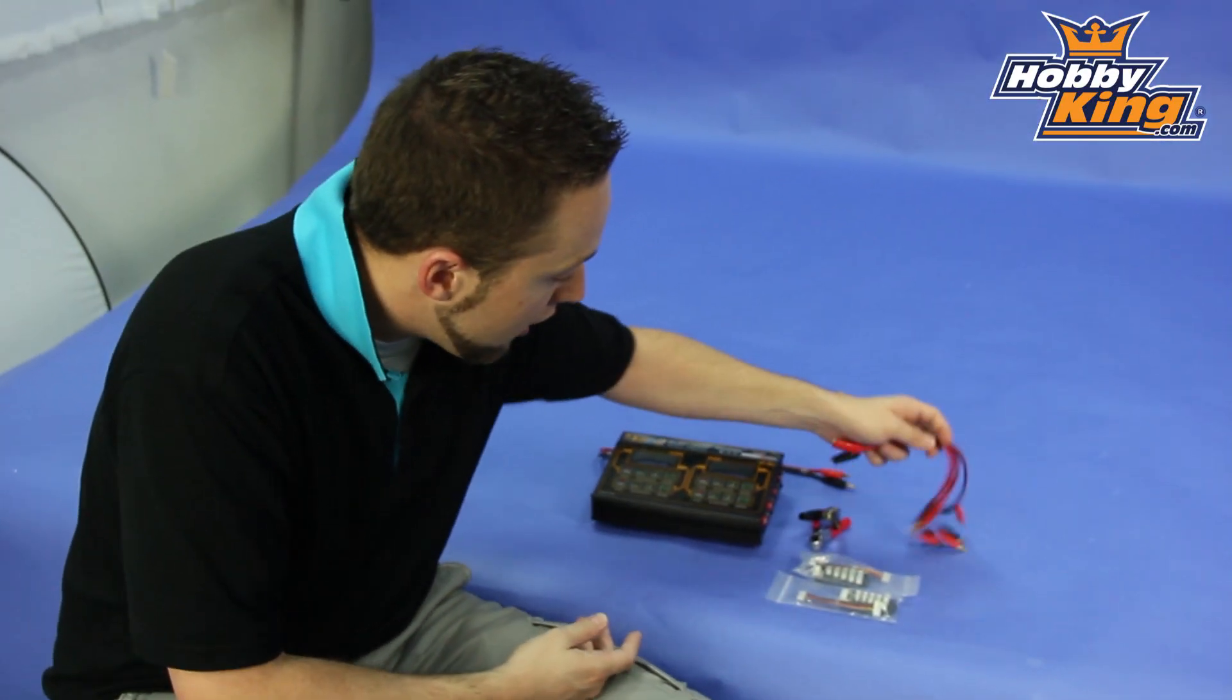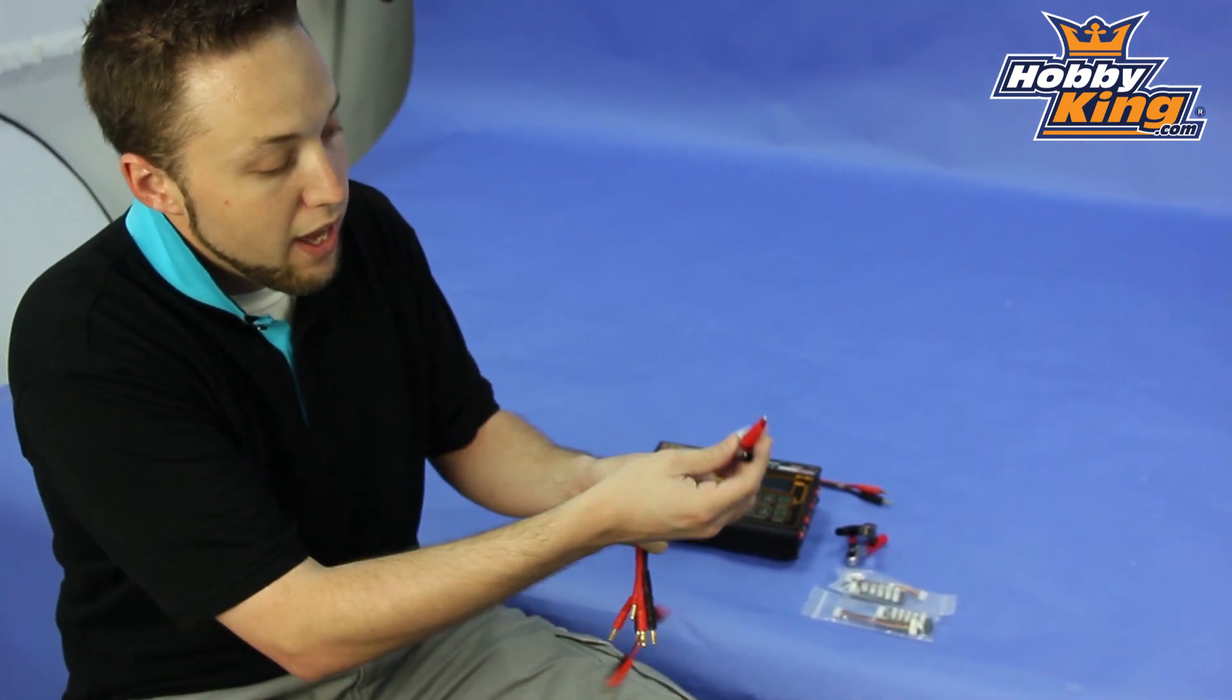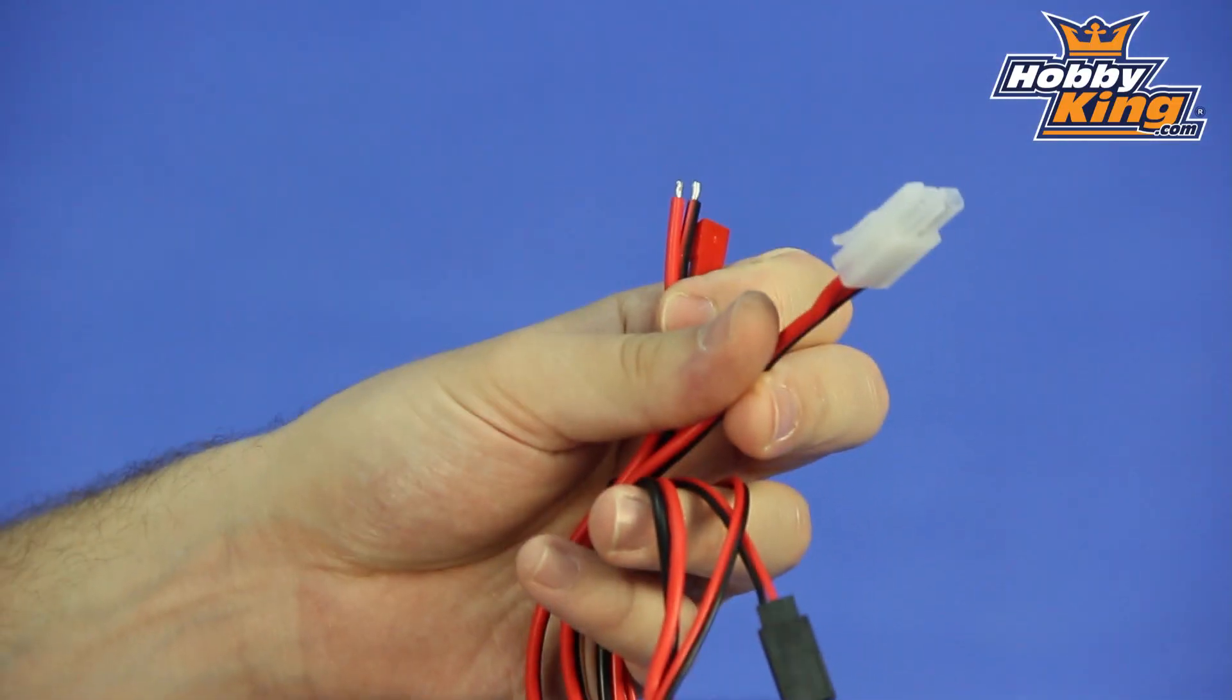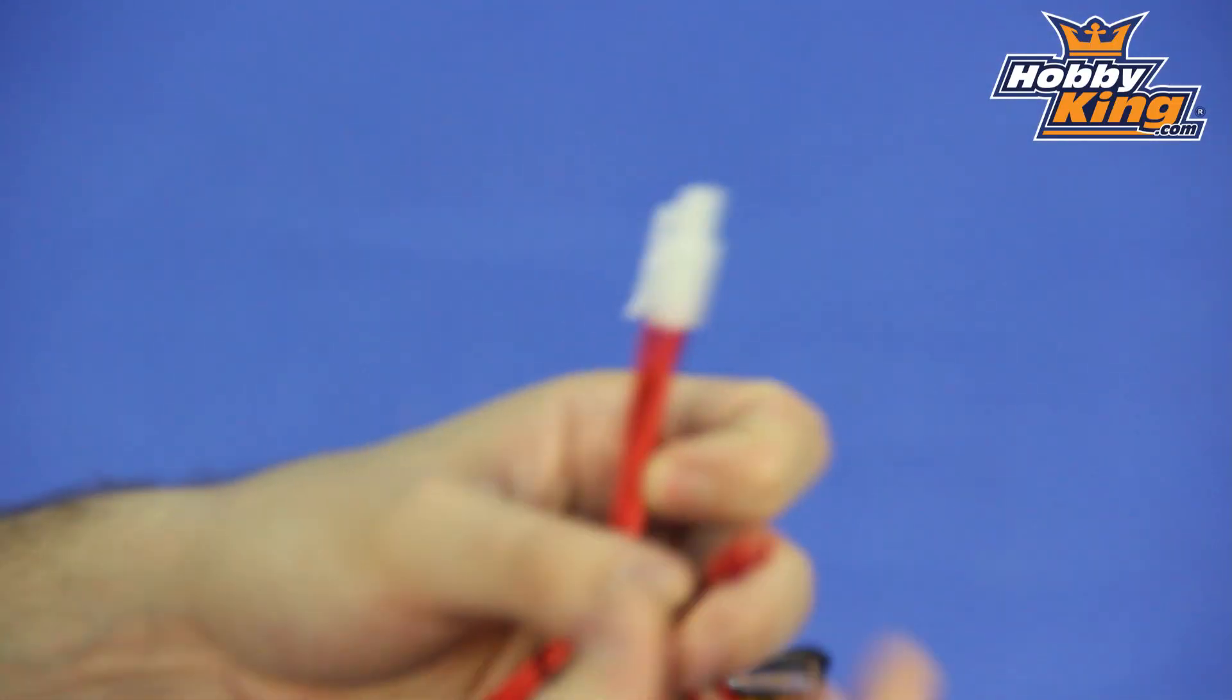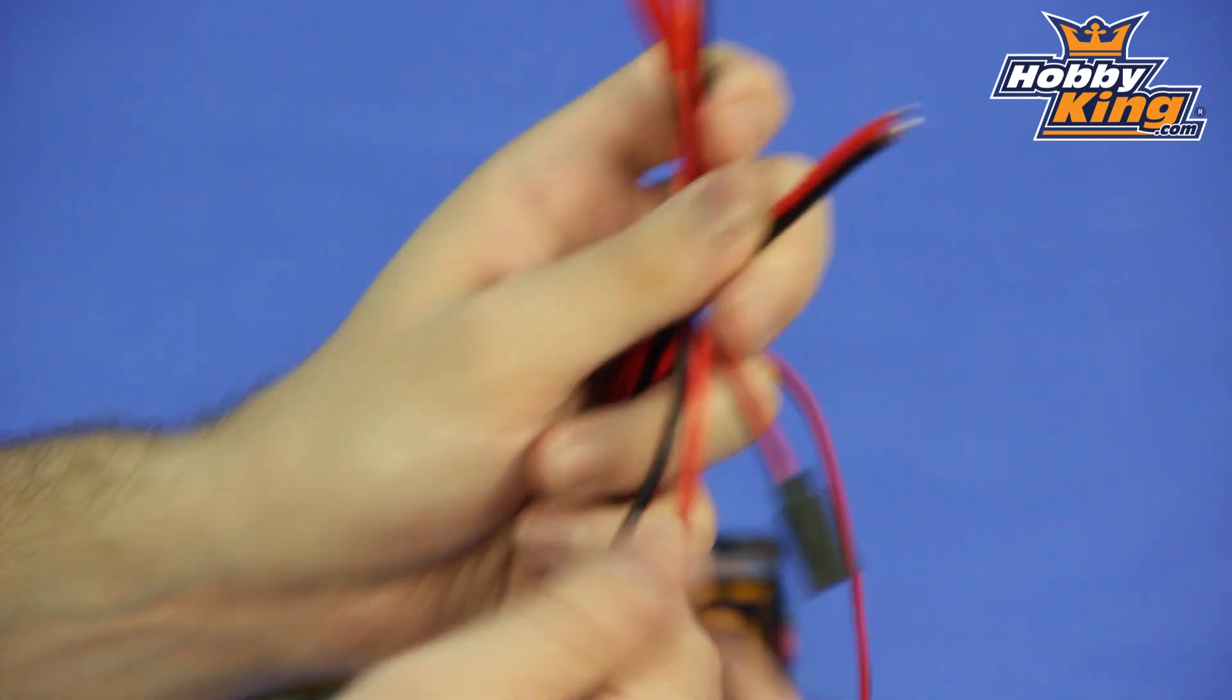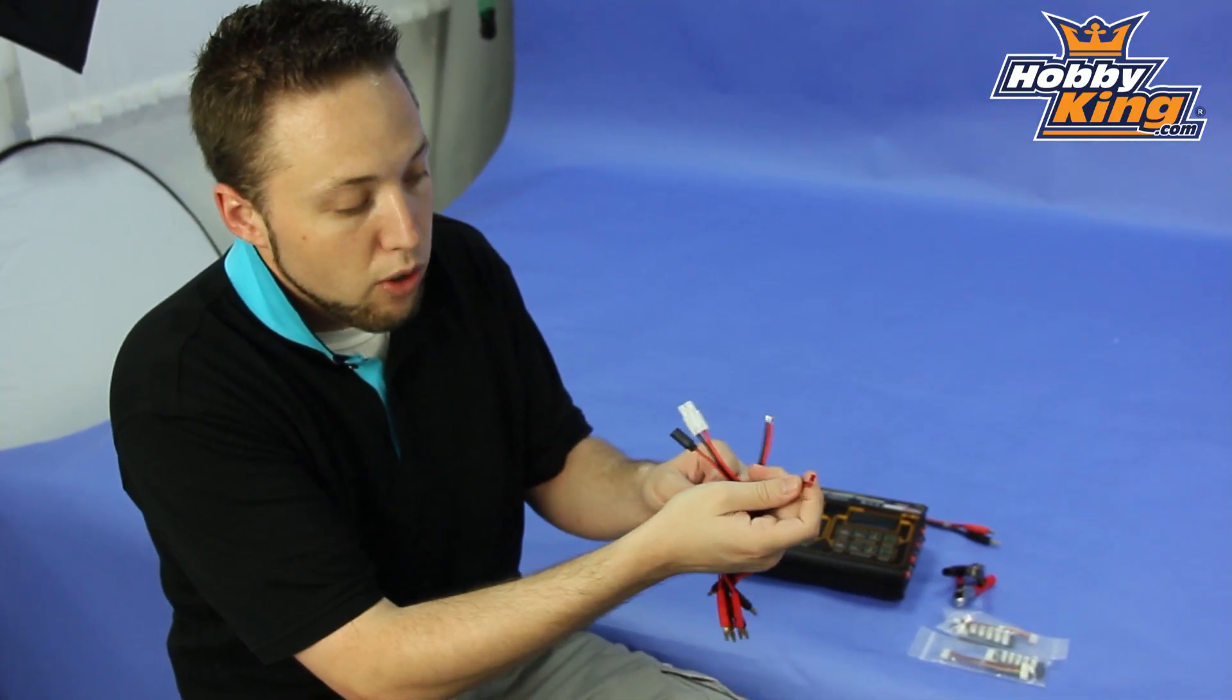It comes with four sets of charge leads: standard alligator clips, a Tamiya style plug, a Futaba style receiver battery plug, bare leads for adding your own plug, and a JST plug.